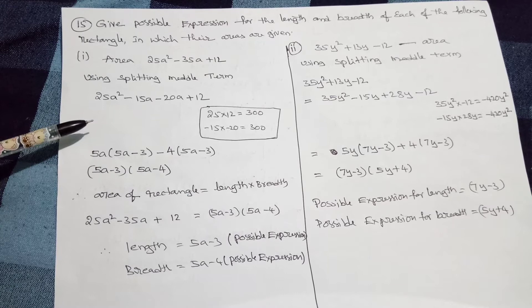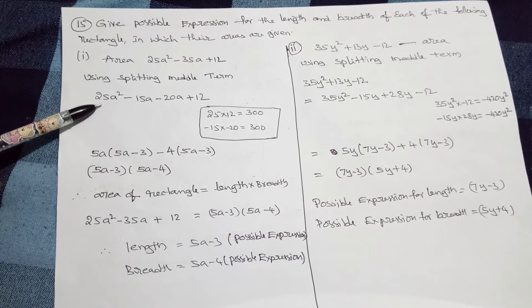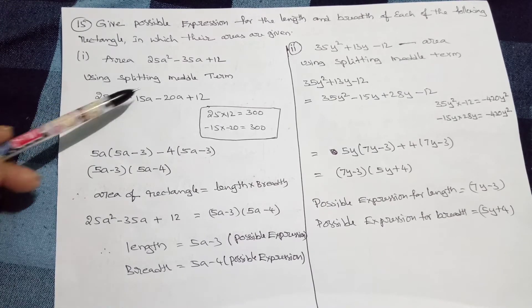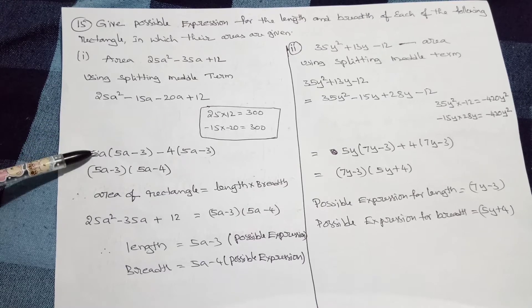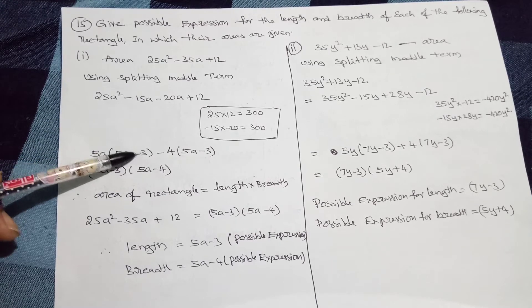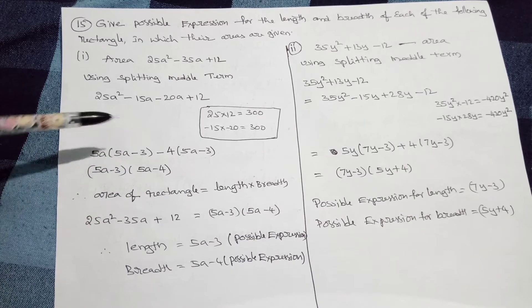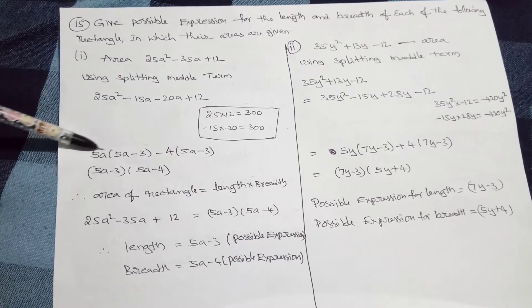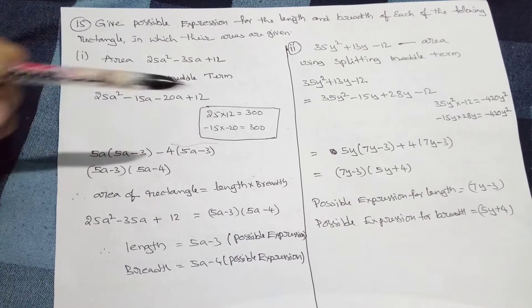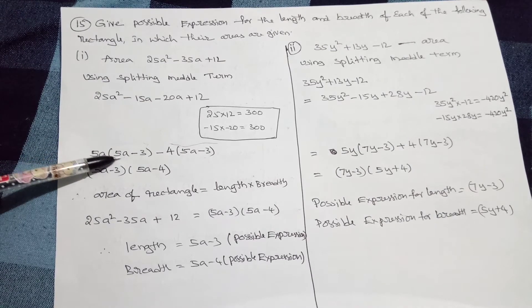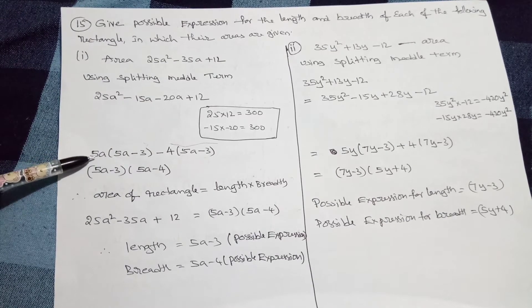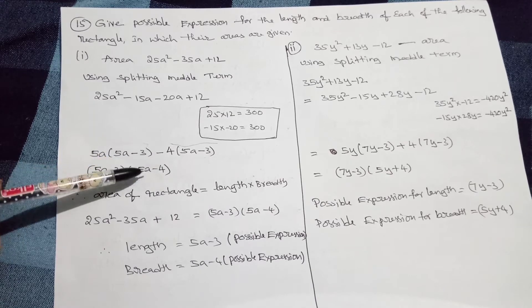Now here, take the common: 5a is common. Here 5a - 3. Here 5a - 3. Therefore, here we have two terms. This is the first term and this is second term. From these two terms, 5a - 3 is common. Therefore, 5a - 4 left over.